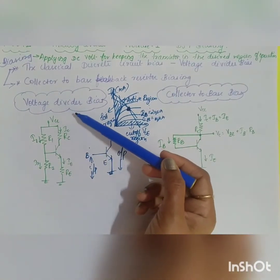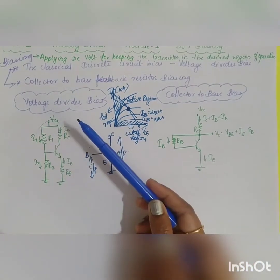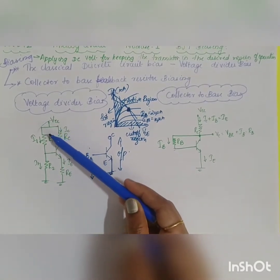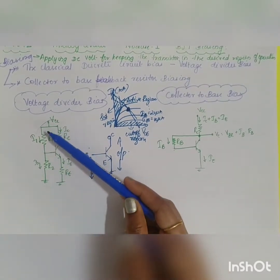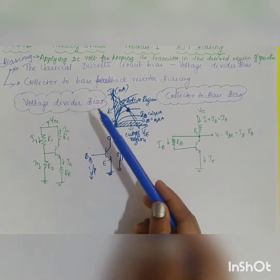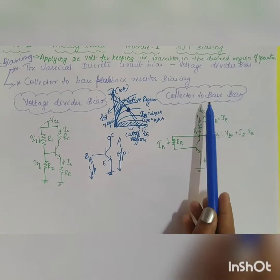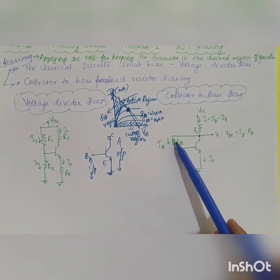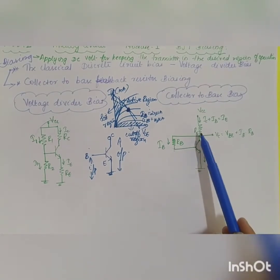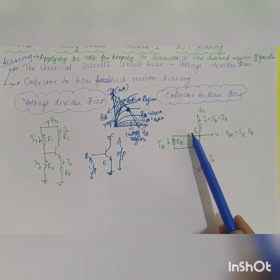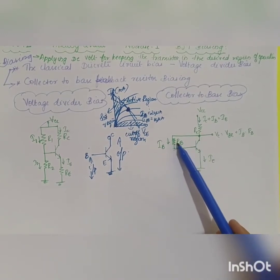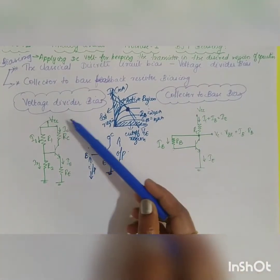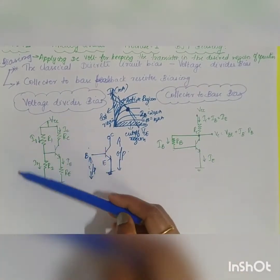In the case of voltage divider biasing, the input side consists of two resistors — a voltage divider with R1 and R2 — across VCC, which is why it has the name voltage divider bias. In the case of collector-to-base bias, the resistor RB, that is the base resistor, is connected from the collector to the base. These are the two different types you are going to study.